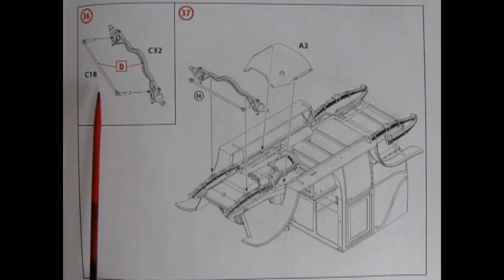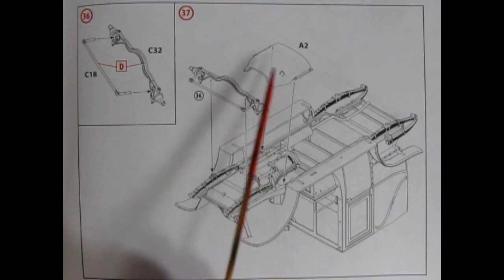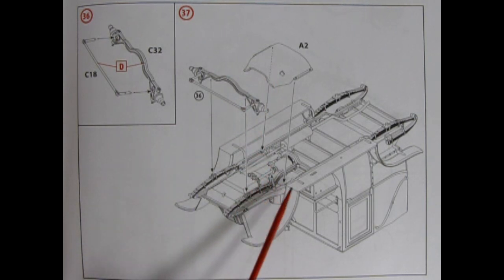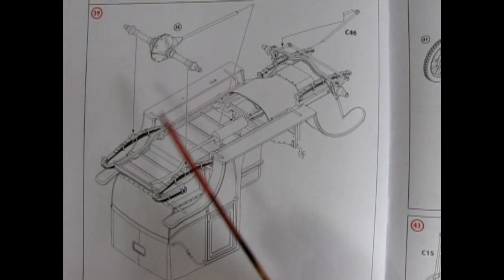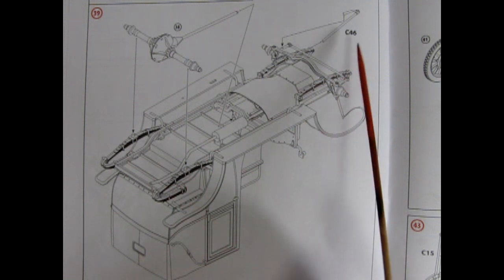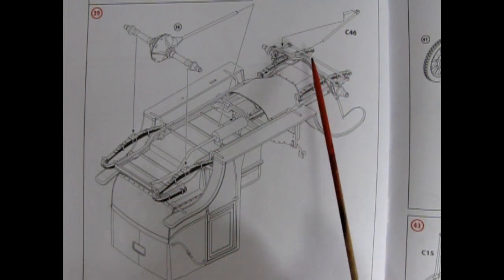Here we have our front axle and tie rod which glue together as a unit and then drop down onto our springs. Here we have a transmission cover which will cover up the back end of the transmission. Our two-piece differential with drive shaft now glues together. Our differential will drop down onto the rear springs, and our front steering arm will now attach to the front of our tie rod.